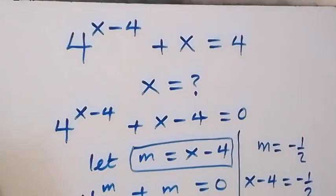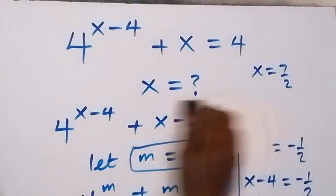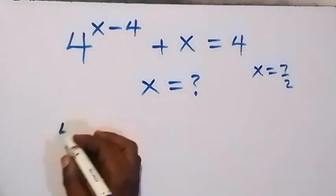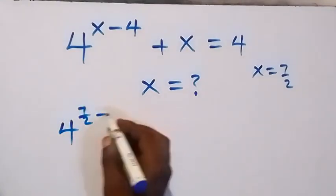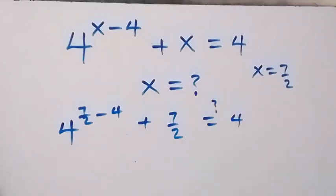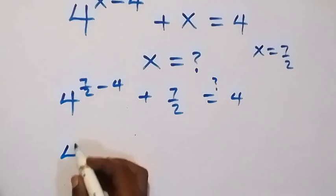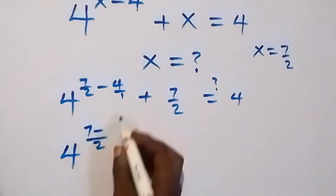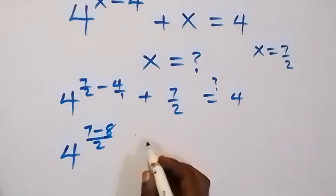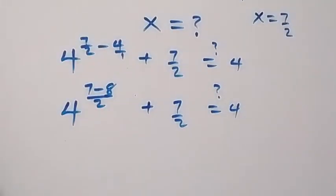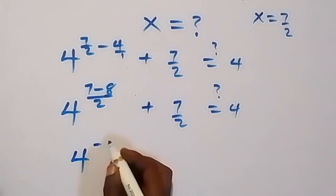Now to check if this satisfies our equation, let's put x equals 7 over 2 into the equation. This becomes 4 raised to power 7 over 2 minus 4, plus 7 over 2, equals to 4. On the power, the common denominator is 2, so we get 7 minus 8 over 2, which is minus 1 over 2. So we have 4 raised to power minus half.